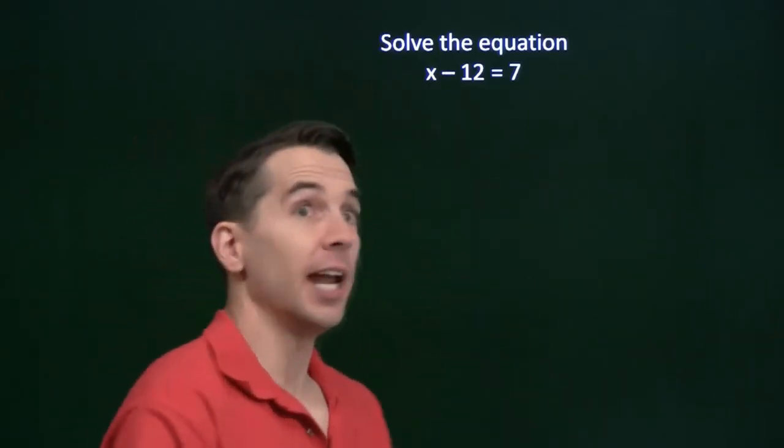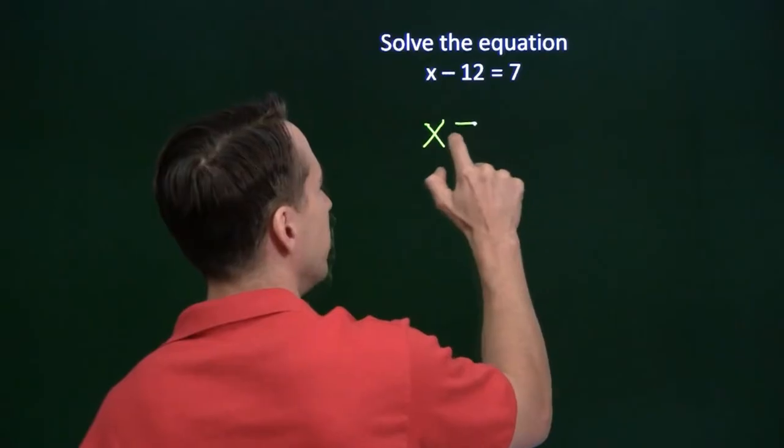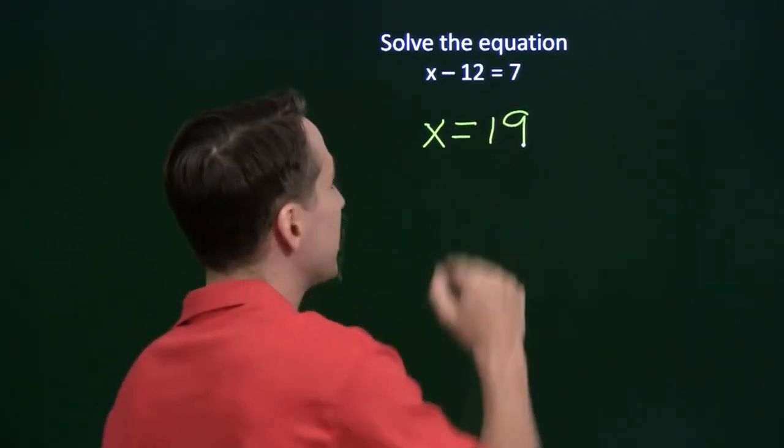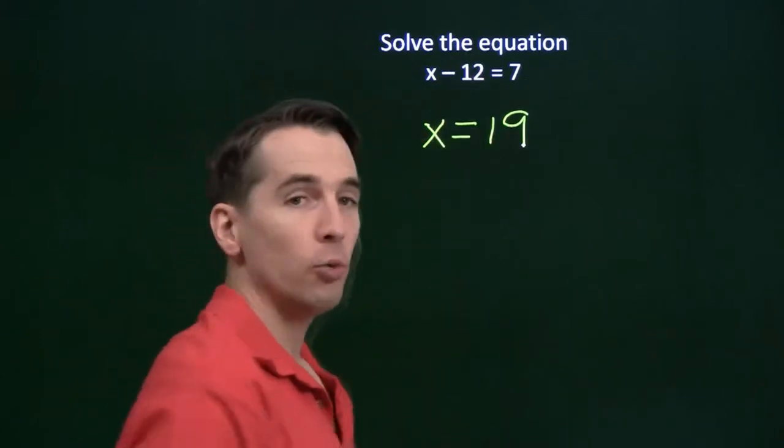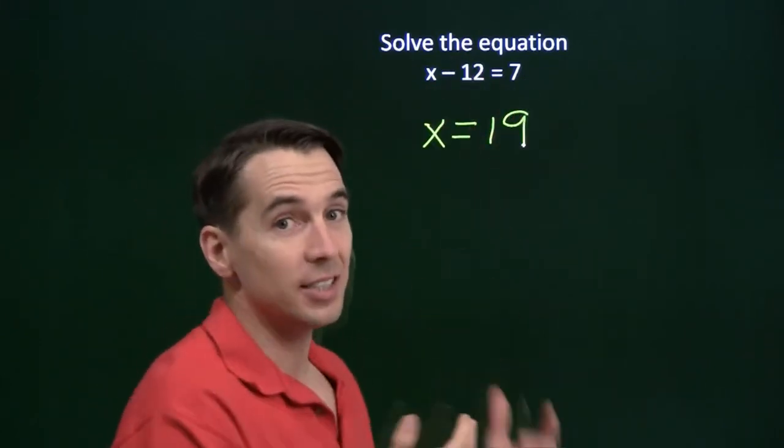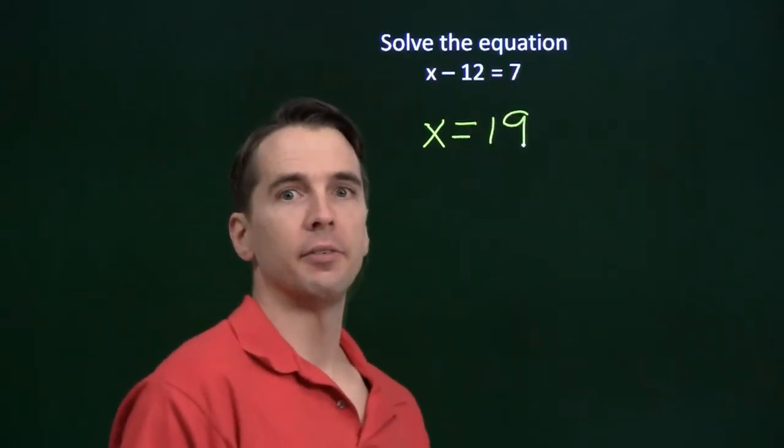Now, of course, you're just sitting there saying, hey, it's 19. 19 is the number that you subtract 12 from in order to get 7, and that's right. X equals 19. We've found the only value of the variable here that works in this equation, because 19 is the only number we can subtract 12 from in order to get 7.